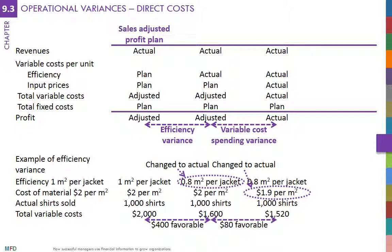Like competitive variances, there can be more detailed variances. For instance, for each type of input there can be an efficiency variance and a spending variance. For example, a company producing ice cream can separate efficiency and spending variances for the different inputs such as milk and flavors.